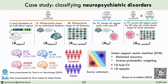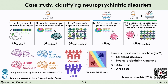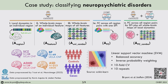As a translationally relevant case study, and presumably the reason I've been invited to participate in this session, we demonstrate the systematic approach for case-control classification of four neuropsychiatric disorders: schizophrenia, bipolar I disorder, attention deficit hyperactivity disorder, and autism spectrum disorder. In all of the models that we tested, we evaluated classification performance using balanced accuracy after applying inverse probability weighting across 10 repeats of 10-fold cross-validation.